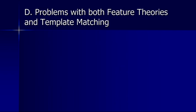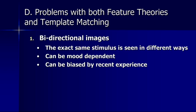There are some problems that neither feature theories nor template matching theory are able to account for on their own. The first of these are bidirectional images — instances where the exact same stimulus can be seen in different ways. These can be mood dependent, and they can also be biased by recent experience.